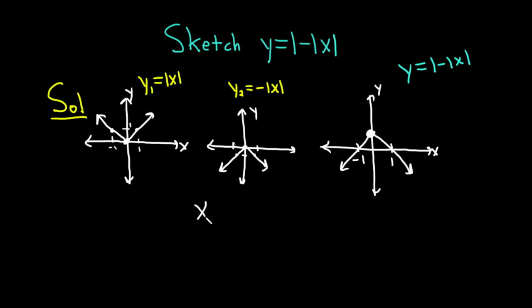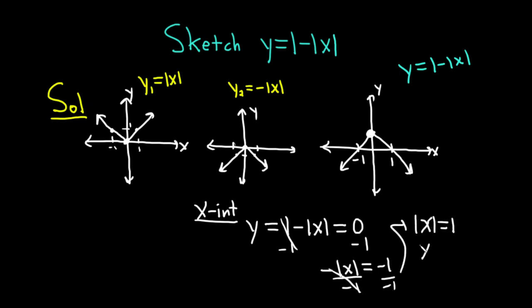If you're not convinced, you can always find the x-intercepts by taking your equation and setting it equal to 0. So y equals 1 minus the absolute value of x set equal to 0. To solve for this, subtract 1 from both sides, which gives us minus the absolute value of x equals minus 1. Then divide by minus 1. We end up with the absolute value of x equal to 1, which means x equals plus or minus 1. Whenever you have the absolute value of x equal to a number, you drop the absolute value and put a plus or minus. These would be the x-intercepts.